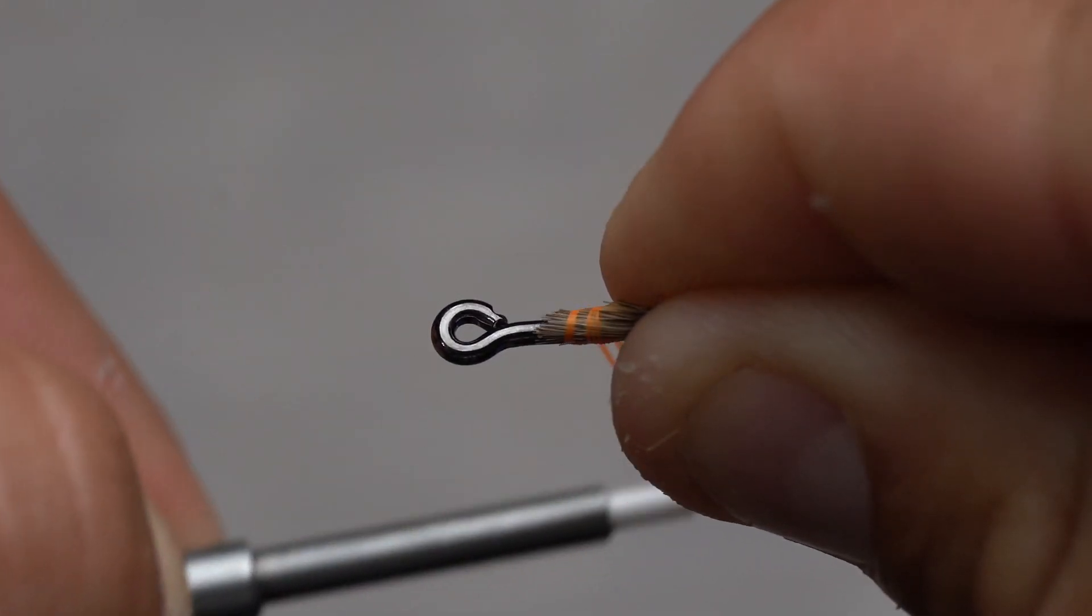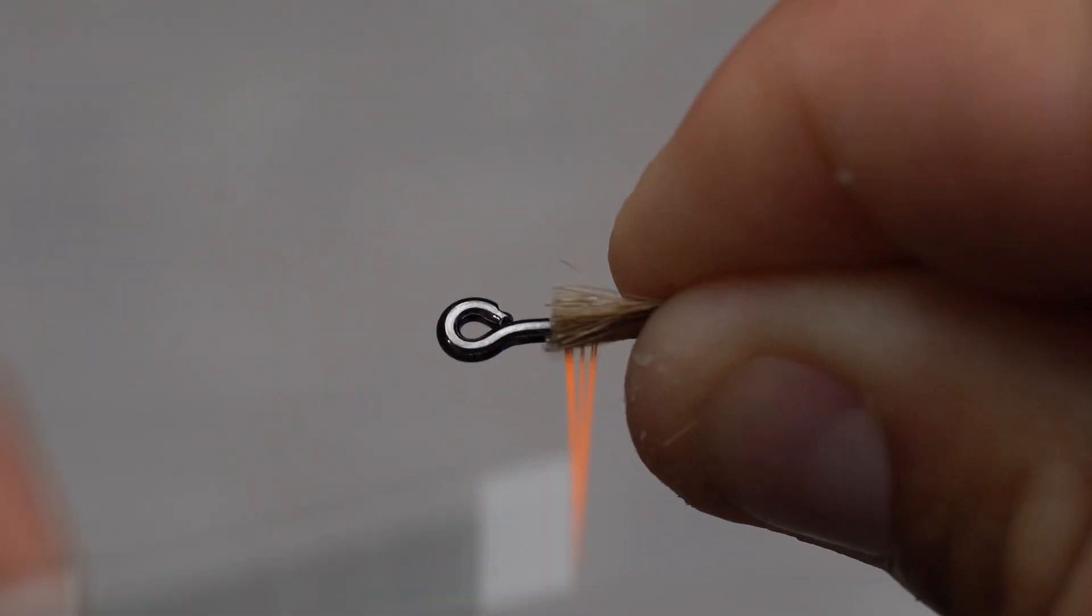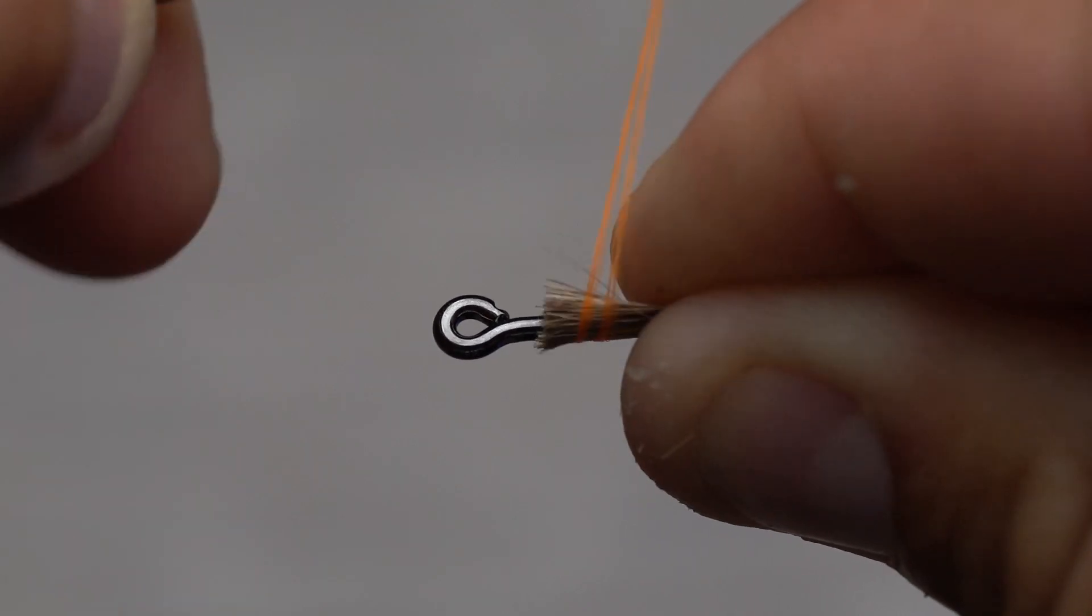When you tie without thread control, you can notice how when I keep tension on the bobbin and the thread and do a top pin trap, it pushes all the material over and to the side of the hook.